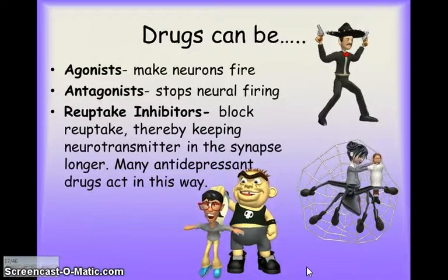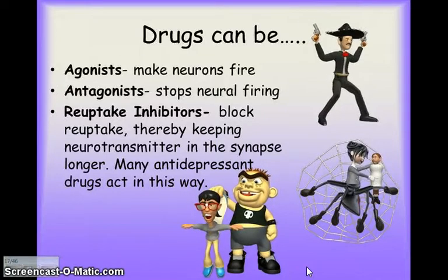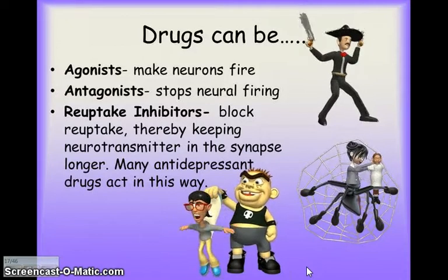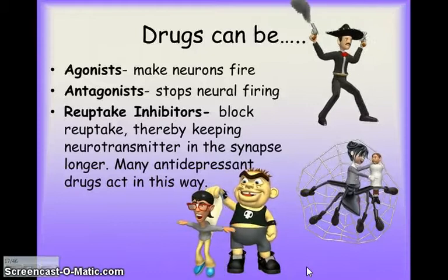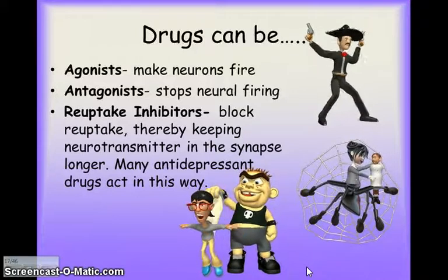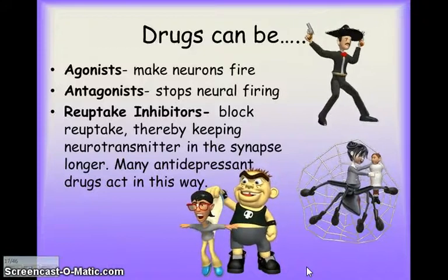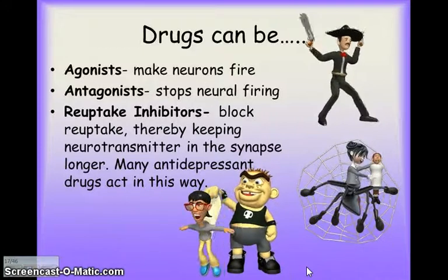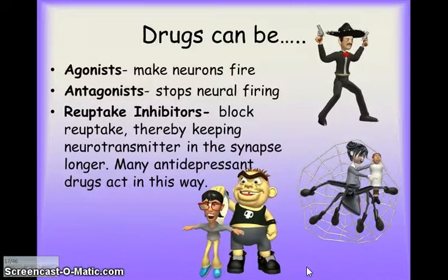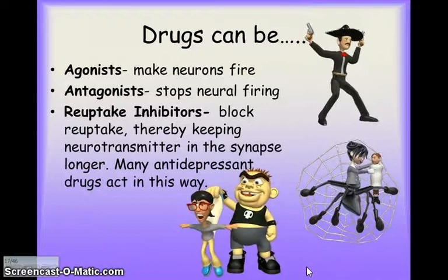Many antidepressant drugs act as reuptake inhibitors. Drugs can mimic what neurotransmitters do, and this is where a lot of knowledge has been gained over the last 30 years about how the brain works — understanding the neurotransmitters being sent and creating drugs that simulate them. This is a huge area within neuroscience today.